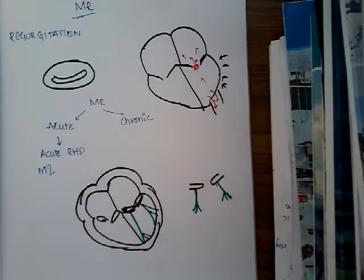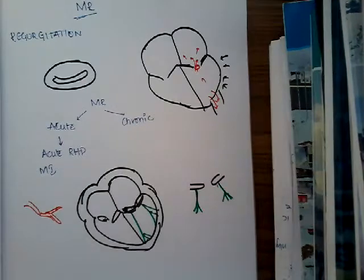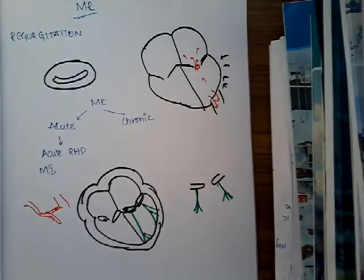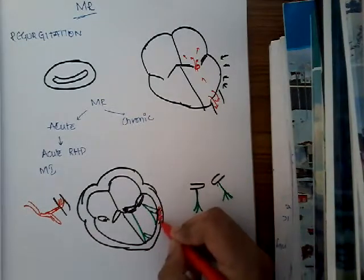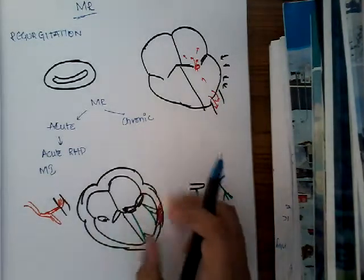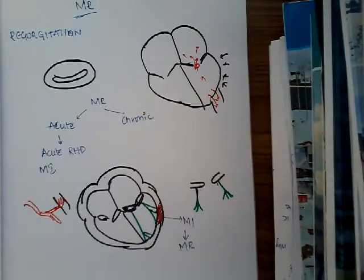The second important acute cause is myocardial infarction. In myocardial infarction, there is an interruption to blood supply — a thrombus or embolus impacts and occludes a small coronary artery branch. Because of this occlusion, blood supply to the distal part is lost, causing ischemia and infarction at that area. When ischemia affects the papillary muscles — to which the chordae tendineae are attached — the coordination between the chordae tendineae and papillary muscles is lost, leading to mitral regurgitation.